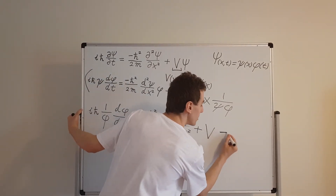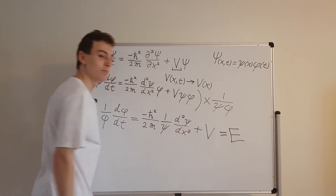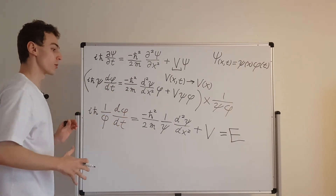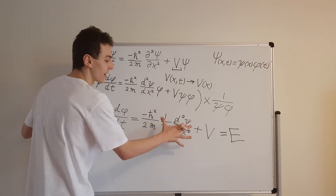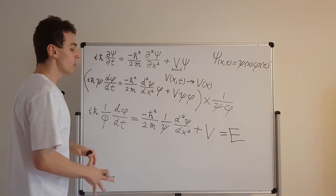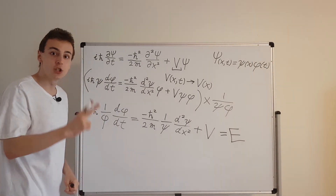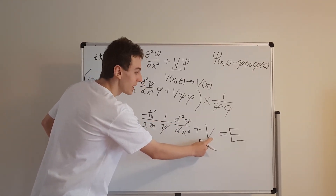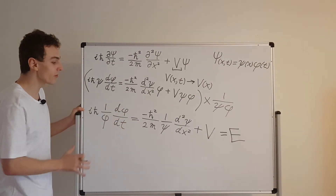I'm going to set both sides equal to a constant E, and the reason I'm calling it E is because this constant is actually the energy. So the left hand side gives us one ordinary differential equation and the right hand side gives us another. The right hand side ODE is going to be difficult to solve depending on V — if V is a complicated function this will be hard. But the left hand side ODE is going to be trivial to solve — in fact its solution is an exponential function, and we'll solve that in the next video.